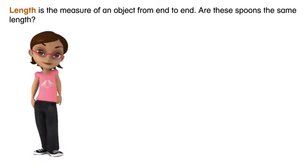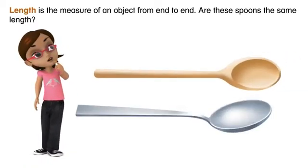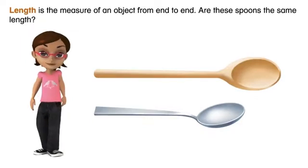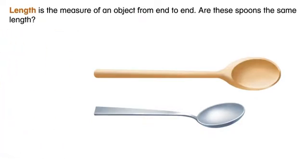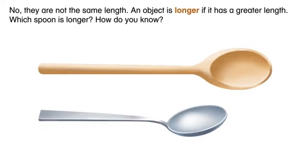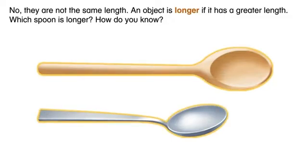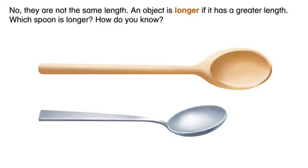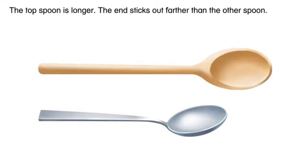Length is the measure of an object from end to end. Are these spoons the same length? No, they are not the same length. An object is longer if it has greater length. Which spoon is longer? How do you know? The top spoon is longer. The end sticks out farther than the other spoon.